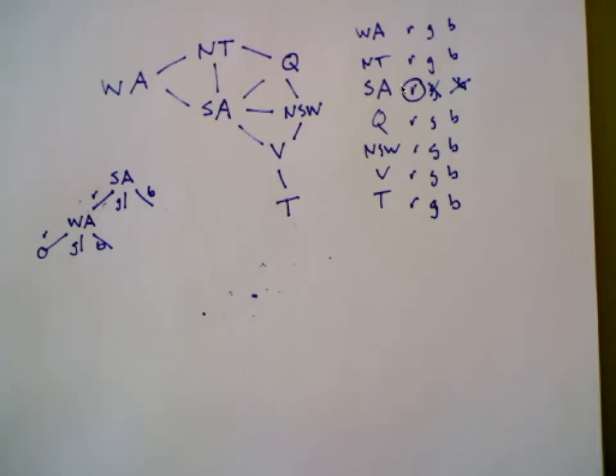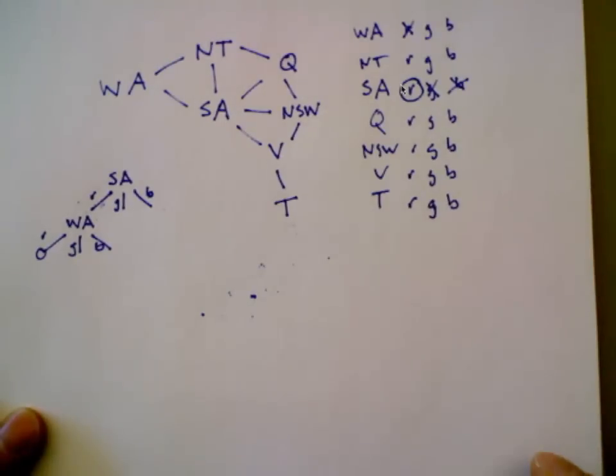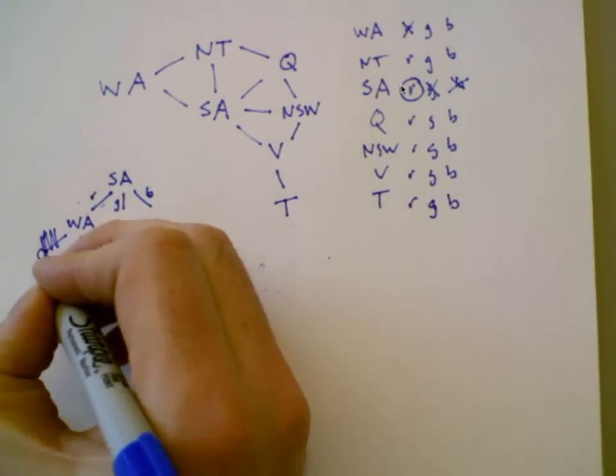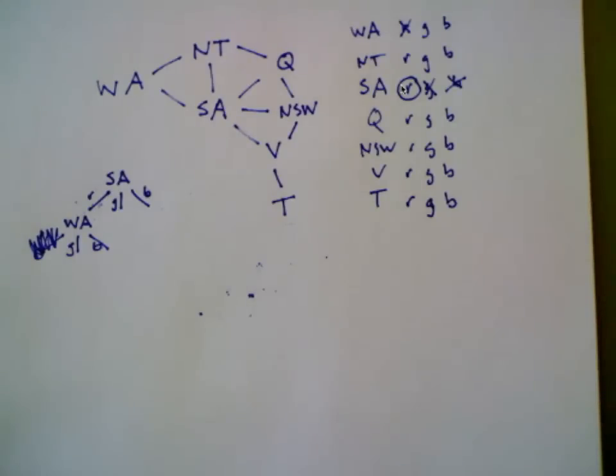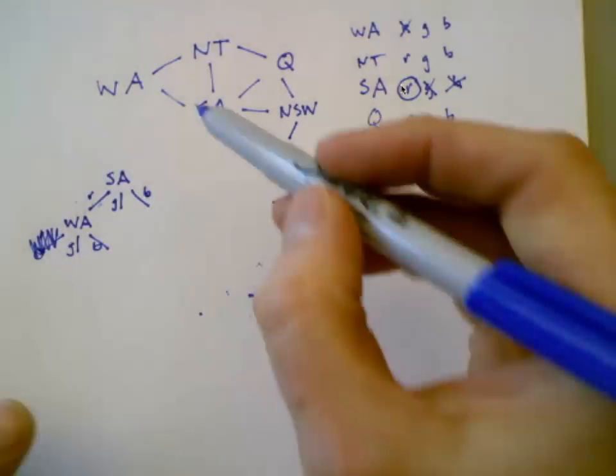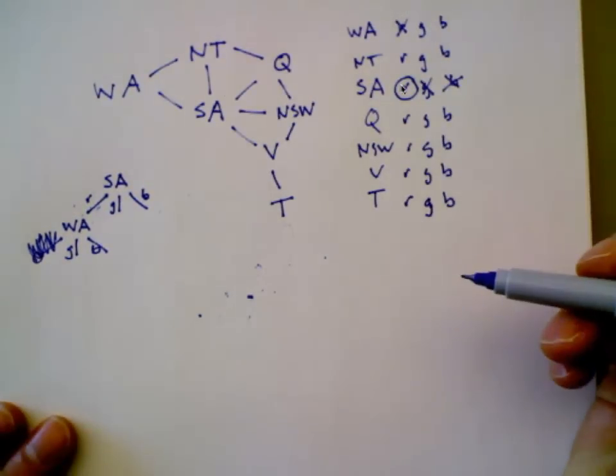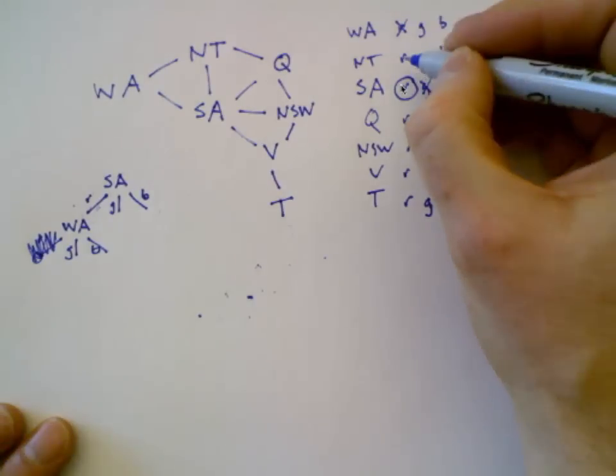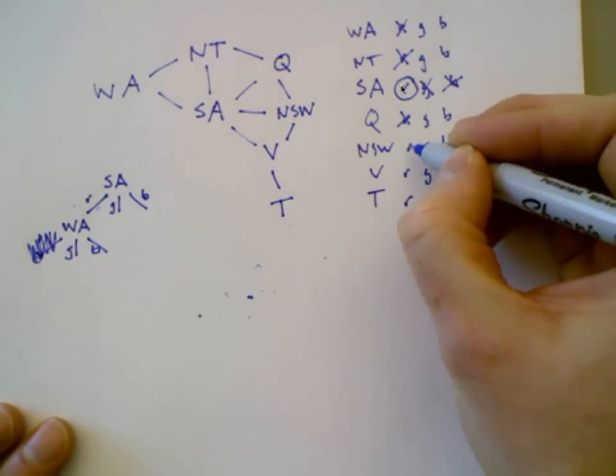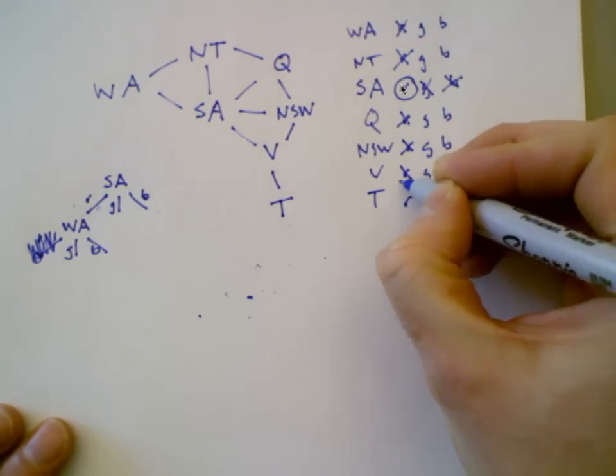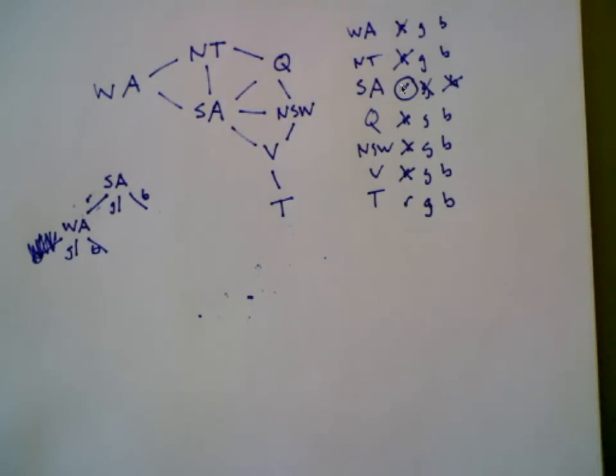Anybody want to guess what forward checking is going to do to the domain of Western Australia? Yes, thank you, sir. Ka-chunk. So when we get around to Western Australia, that option doesn't even exist. Not only that, forward checking is going to go to every variable connected to Southern Australia in the constraint graph and eliminate the conflicting value. So it's going to go to the Northwest Territories and Queensland and New South Wales and Victoria. And it's going to eliminate red because that's incompatible with the value we just gave South Australia.